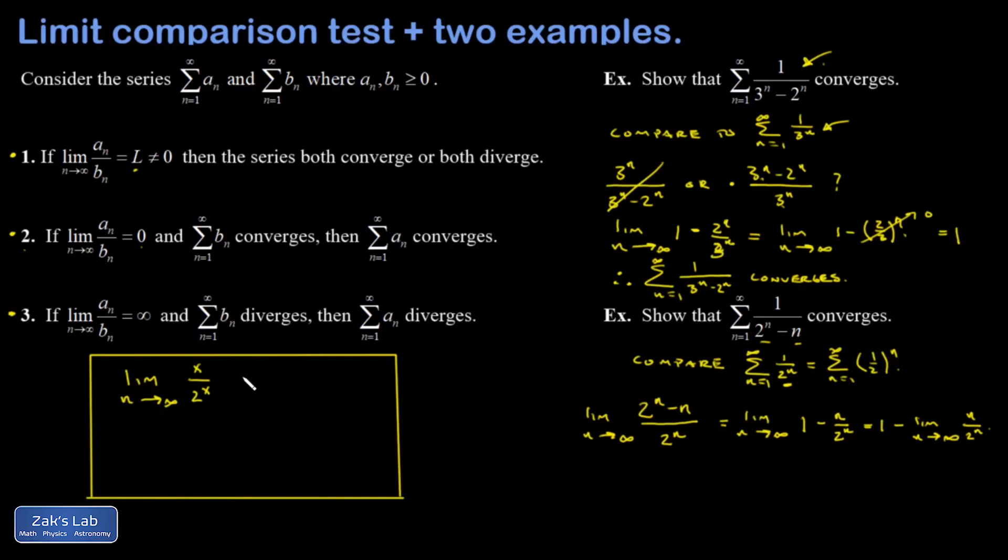So this is an infinity over infinity indeterminate form. L'Hopital's rule says you can differentiate the top and bottom separately and obtain the same value for the limit. So you get a one in the numerator and then a natural log two times two to the x in the denominator.